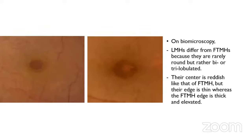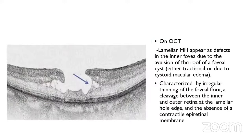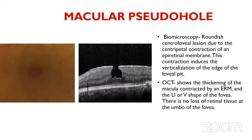On biomicroscopy, lamellar holes differ from full thickness holes because they are rarely round but more ovoid. Their center is reddish like that of full thickness macular holes, but their edge is thin, whereas in full thickness macular hole the edge is thick and elevated. On OCT, lamellar hole appears as a defect in the inner fovea due to avulsion of the roof of the foveal cyst, characterized by irregular thinning with a cleavage between inner and outer retina at the edge, and absence of any contractile epiretinal membrane. Pseudo hole on OCT shows thickening of the macula due to ERM contraction resulting in a U or V-shaped fovea, with no actual loss of retinal tissue.